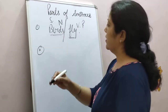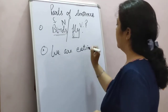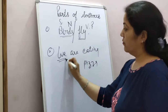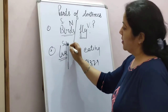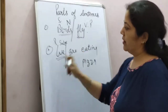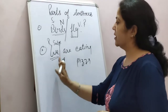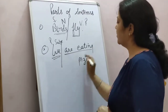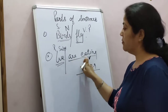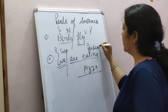Now take the second example: we are eating pizza. In this sentence, 'we' is the subject — because 'we' is a pronoun. As I told you, the noun or pronoun based part of each and every sentence comes under subject. The rest of the part — are eating pizza — comes under predicate. 'Are' is the helping verb and 'eating' is the main verb, so this part comes under predicate.